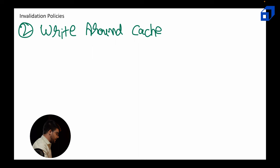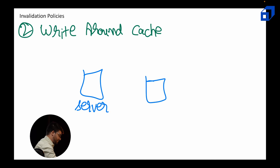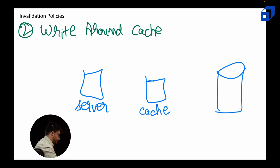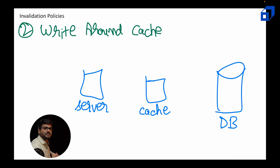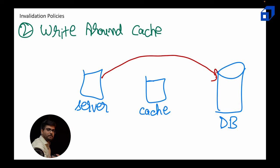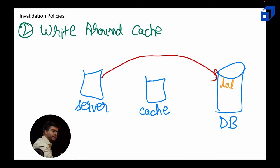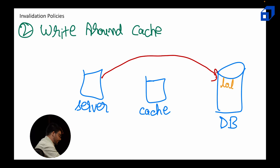Now let's move on to write-around cache. Write-around means we are not going to write through the cache — we write around it. Whenever there is an update request, we won't first make changes in the cache; we make changes only in the database and bypass the cache altogether. So if 'LOL' is added to the database, it will only be in the database and not in the cache. This is the difference between write-through and write-around. You can naturally see a change in write latency — earlier we were writing at two places, now we only write to the database.